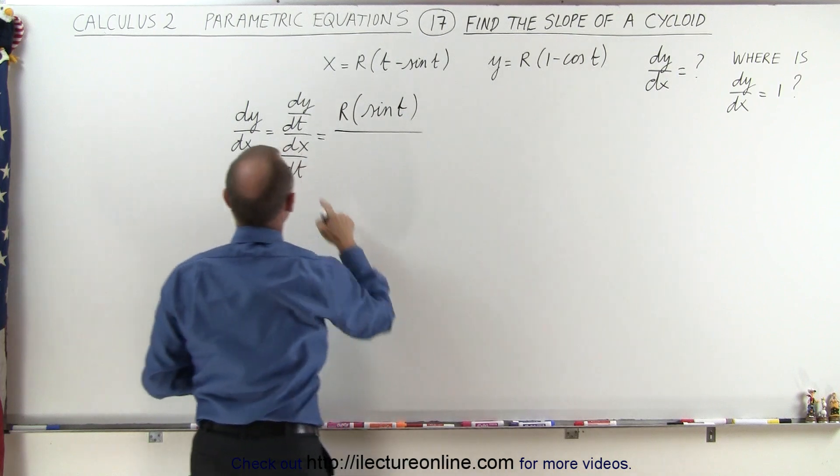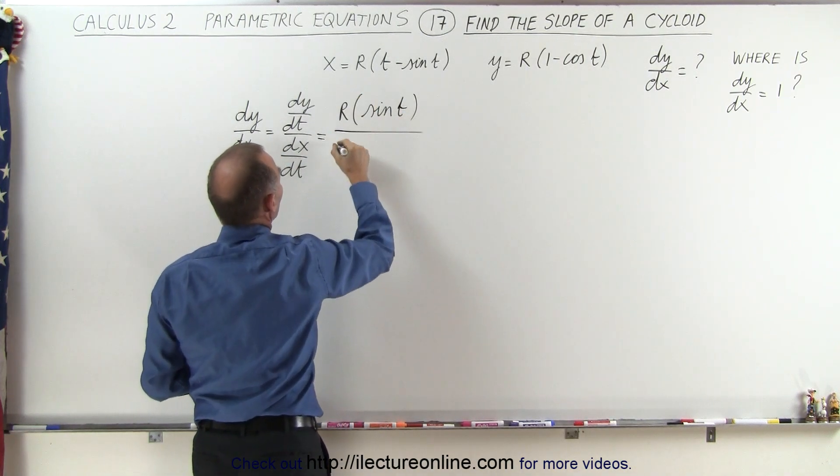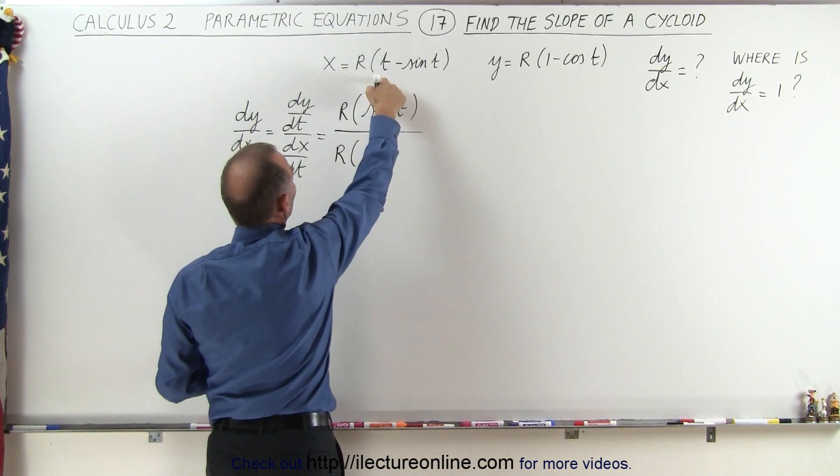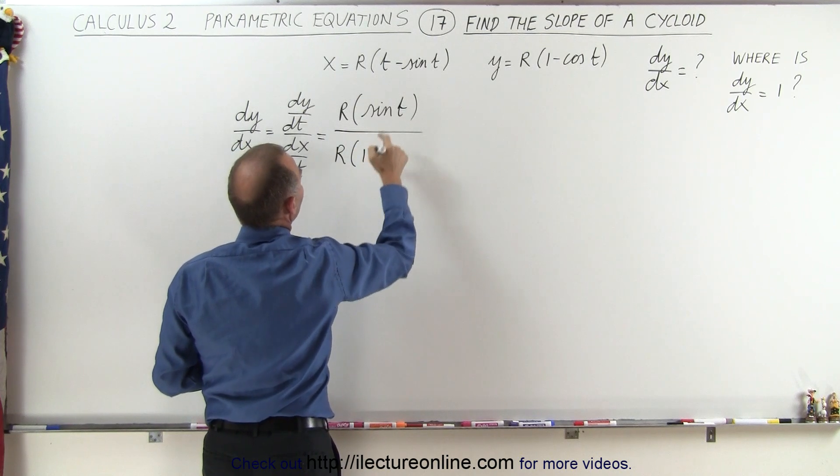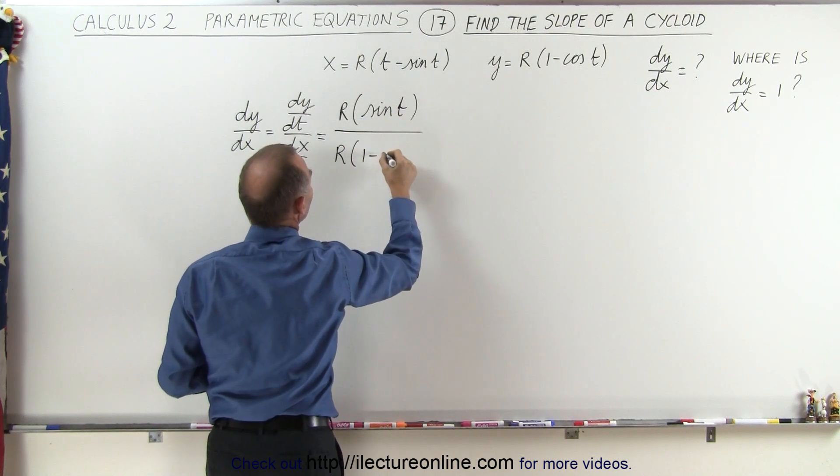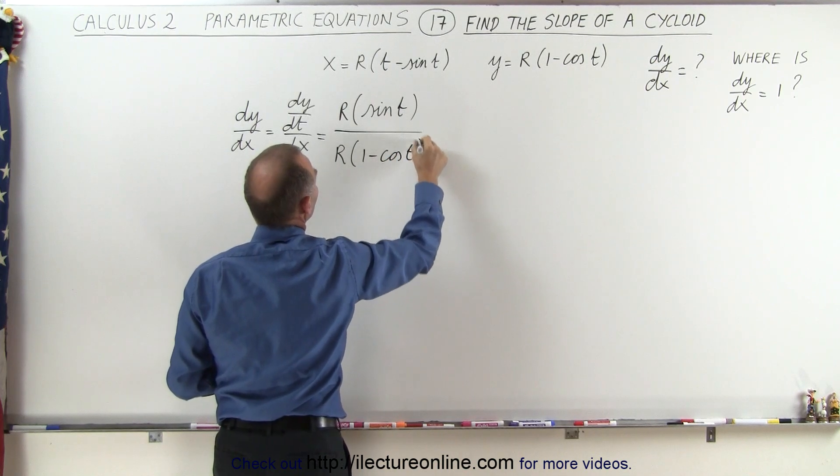In the denominator, we get dx dt, which is equal to r times the derivative of t is equal to 1, and the derivative of sine is the positive cosine, so that's minus the cosine of t.